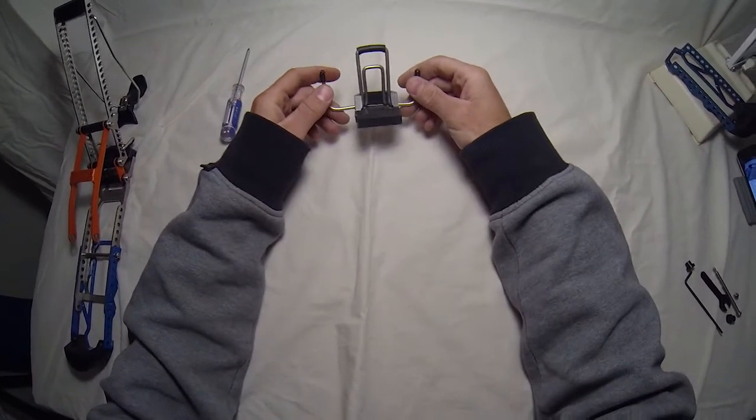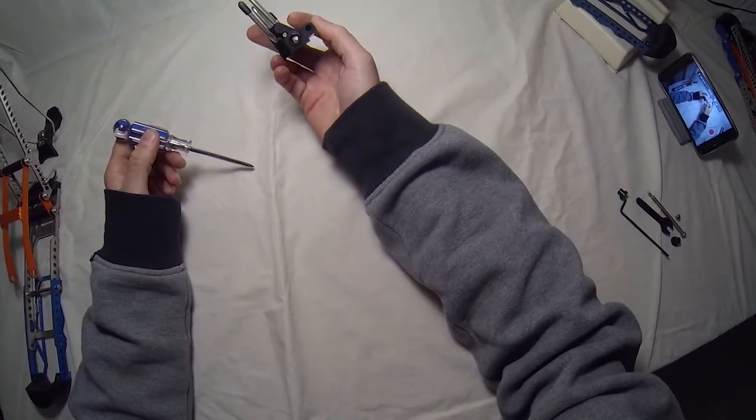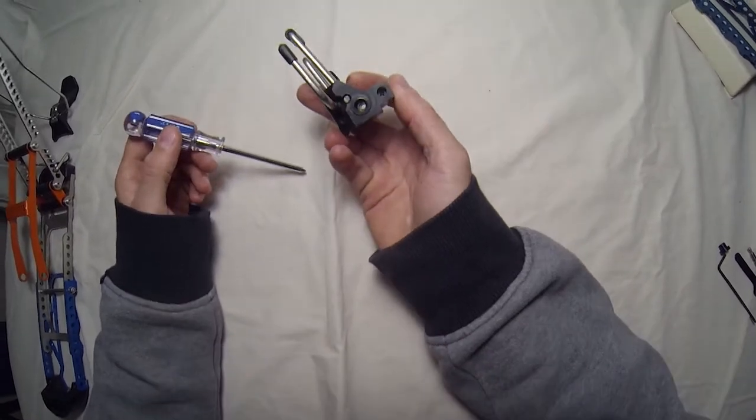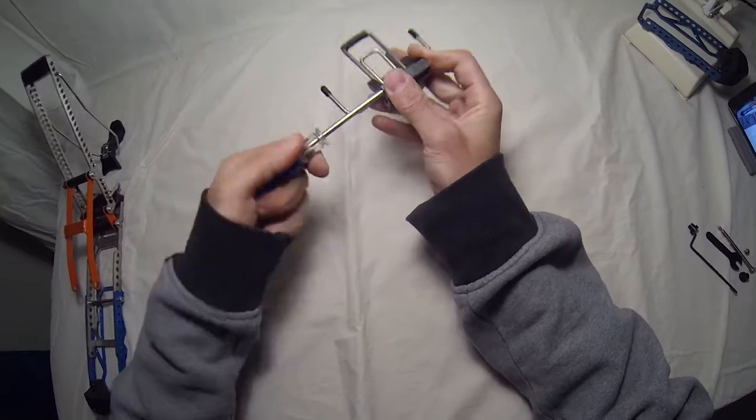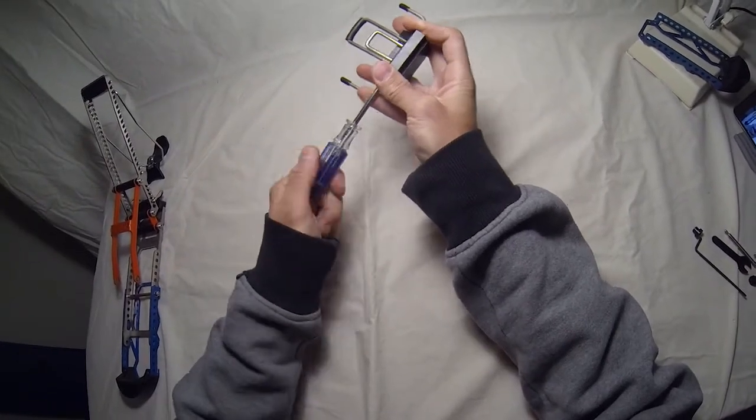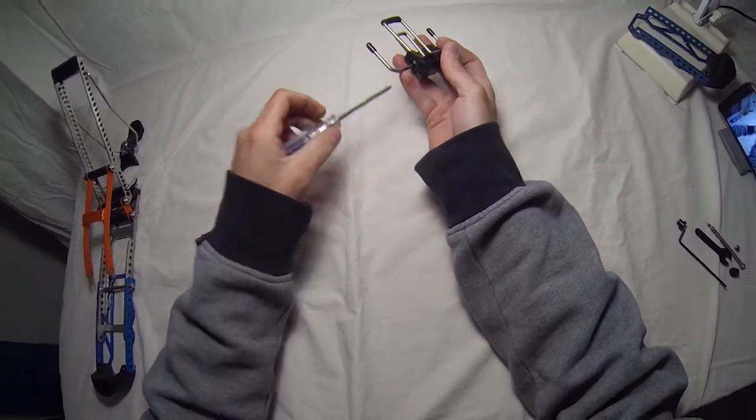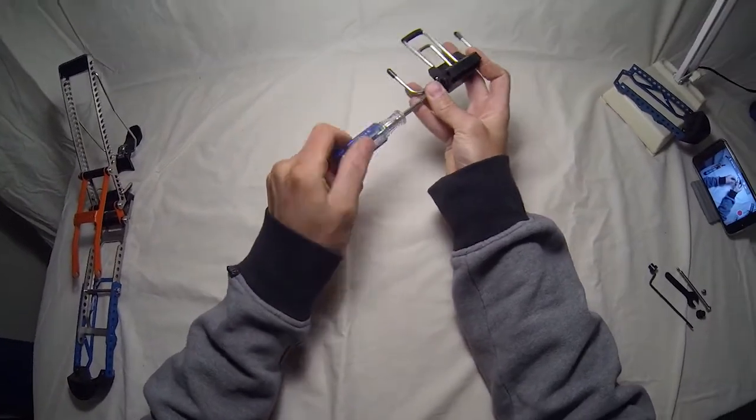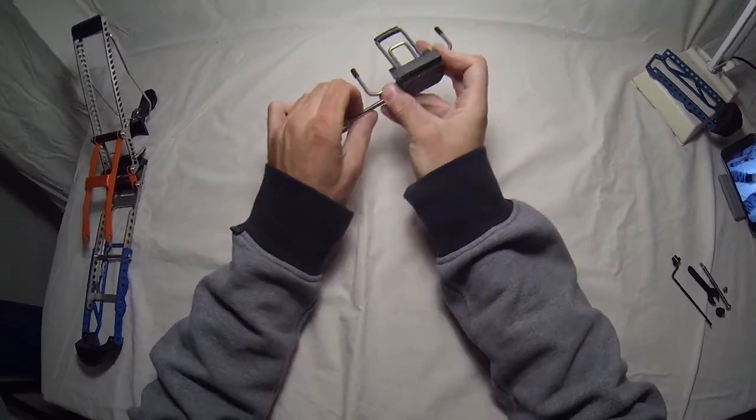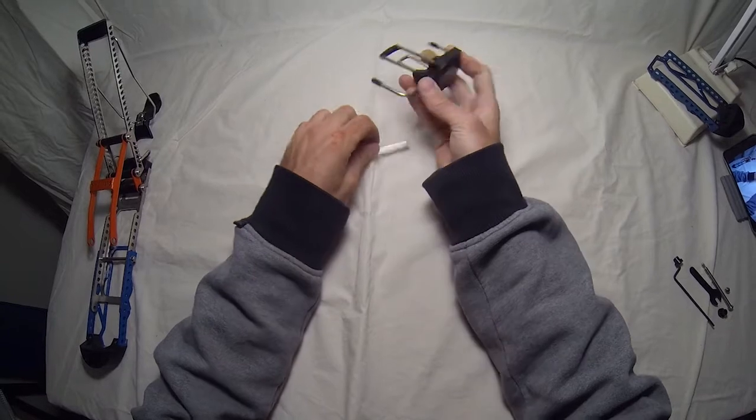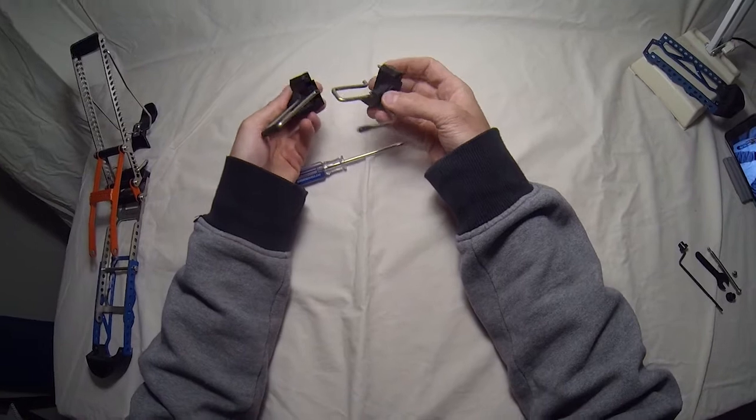Alright, so now we're going to take apart the elevator block. So you have two sides here. One's got, you can kind of see, the Phillips screw and the nut. You want to go in with your screwdriver, hit that Phillips, loosen these screws up all the way. You don't have to take them out, but just loosen them up. Alright, and bada-boom, the elevator block will pull apart.